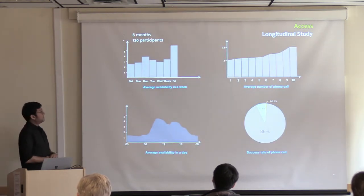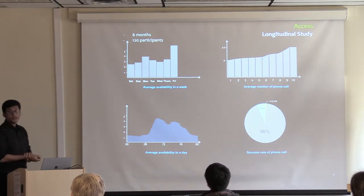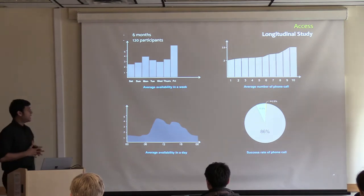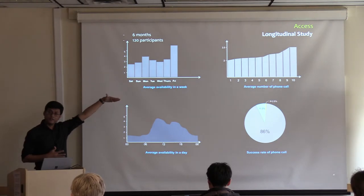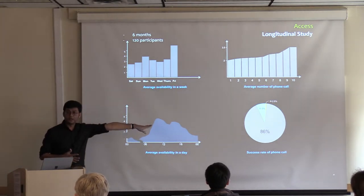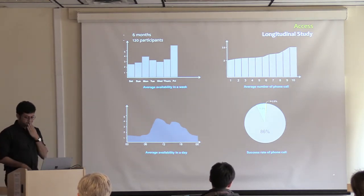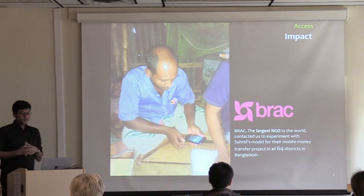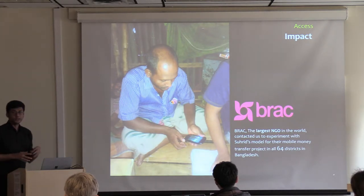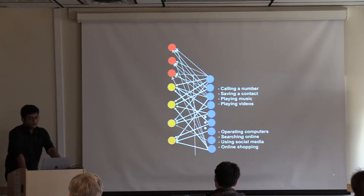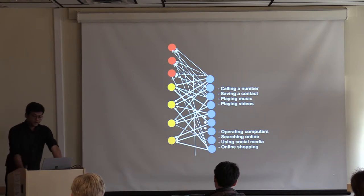We then ran a six-month longitudinal study with 120 participants, and the results from the pilot were supported. We found that over time, their phone call rate actually increased — they were making more calls — and their accuracy in making phone calls increased to 86%, which was remarkable. Recently, the largest mobile operator in Bangladesh contacted us to experiment with this model across all 64 districts using their mobile money network. We are now thinking of extending this model for other mobile phone uses — saving contacts, playing music, playing videos, operating computers, searching online, using social media, and online shopping — and potentially extending it for low-literate users, visually impaired people, senior citizens, or refugees.